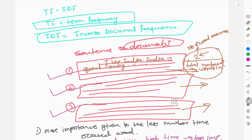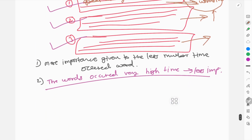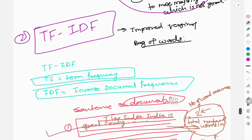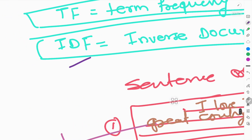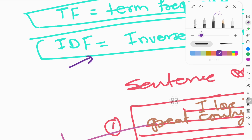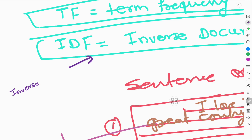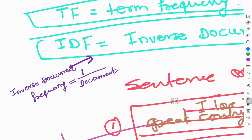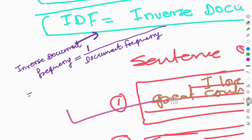In term frequency, similar to bag of words, we are giving more importance to words that occur more often. But there is another term — Inverse Document Frequency — and that is where the magic happens. IDF is the inverse of document frequency.